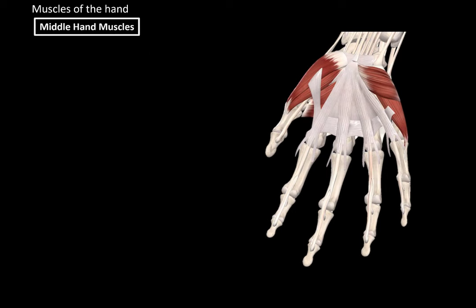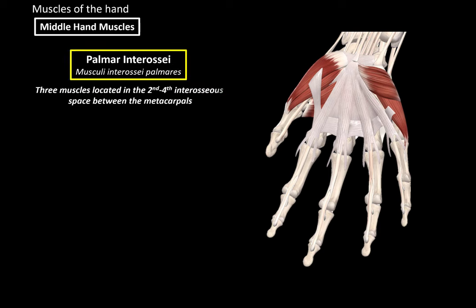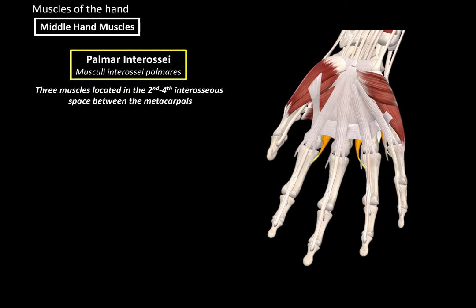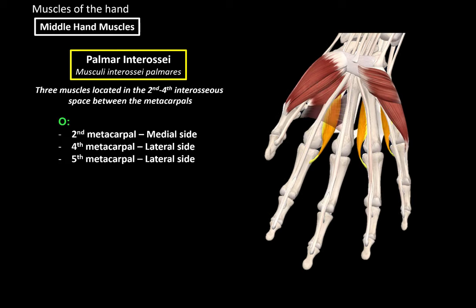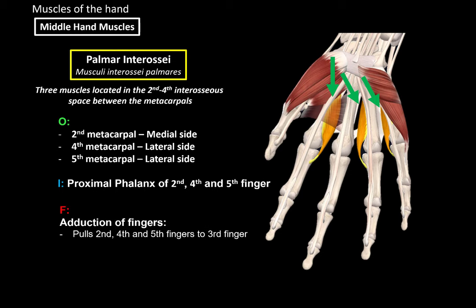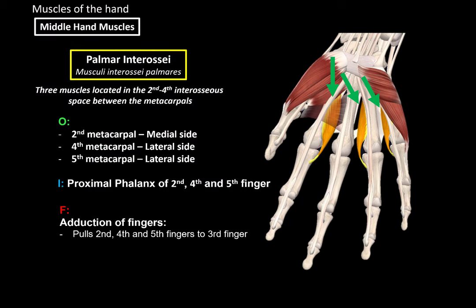Now let's talk about the middle hand muscles, starting with the interossei muscles. There are Palmar Interossei and Dorsal Interossei. The Palmar Interossei are three muscles located in the second to fourth interossei spaces between the metacarpals. They originate from the medial side of the second metacarpal bone, the lateral side of the fourth metacarpal bone, and the lateral side of the fifth metacarpal bone. They insert at the proximal phalanx of the second, fourth, and fifth fingers. When these muscle fibers contract, they adduct the fingers — pulling the second, fourth, and fifth fingers towards the third finger.